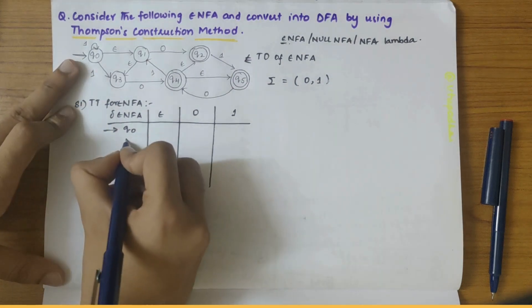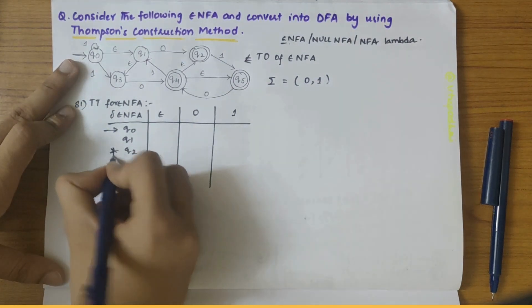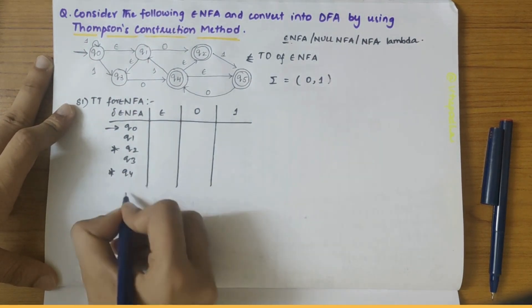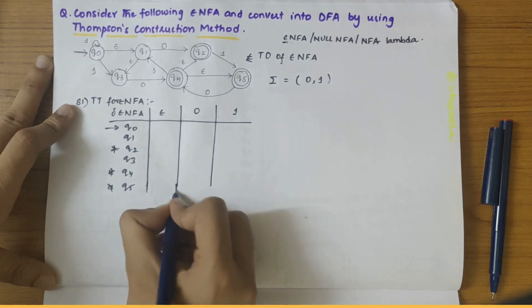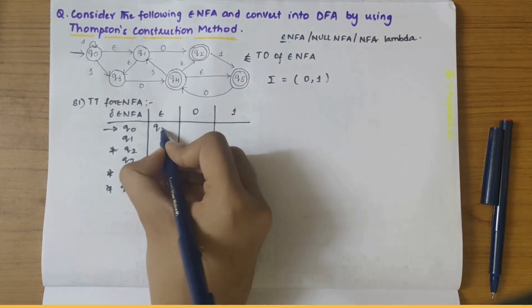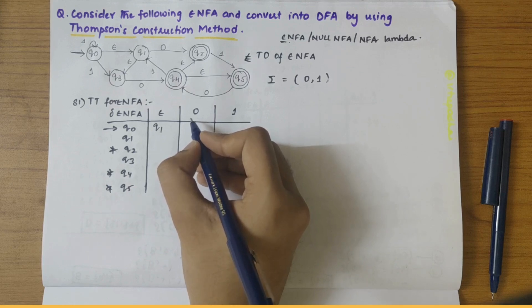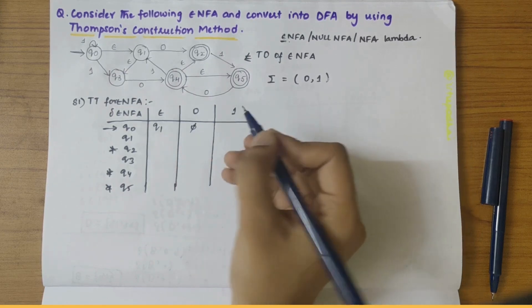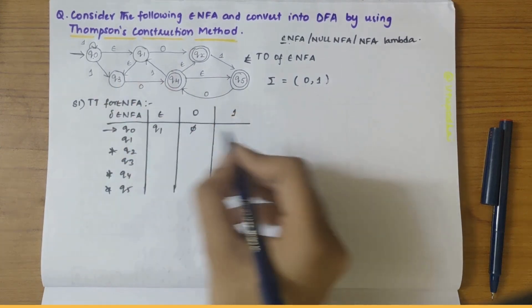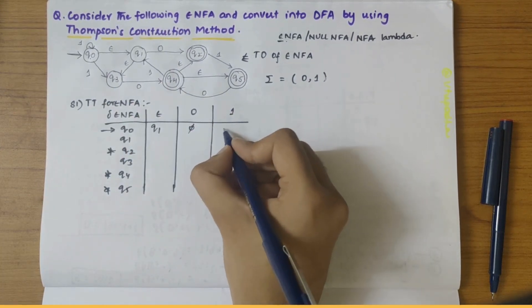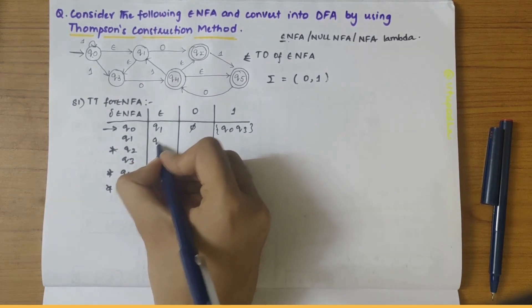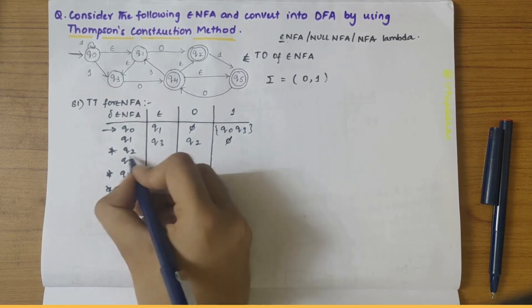The states are: Q0 being the start state, Q1, Q2 being one of the final states, Q3, Q4 being another final state, and Q5 being one more final state. Now let's start filling the values. Q0 on epsilon gives Q1. Q0 on zero gives Q5. Q0 on one gives Q0, Q1, Q3.